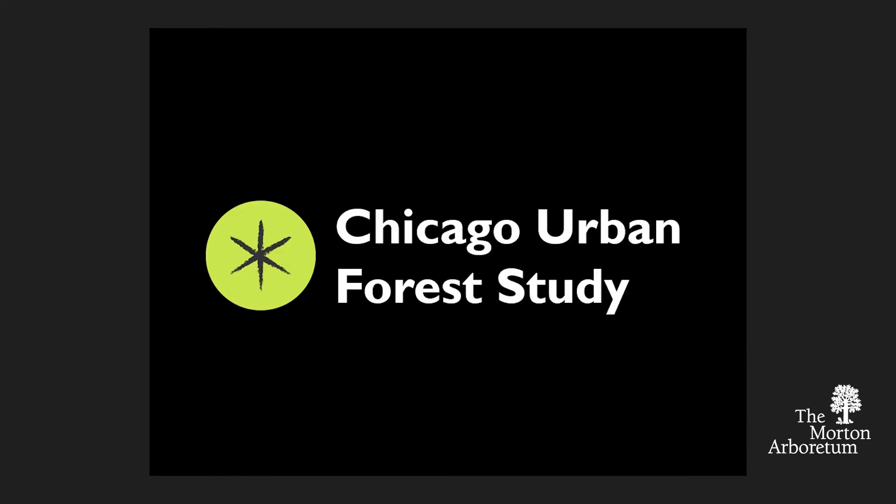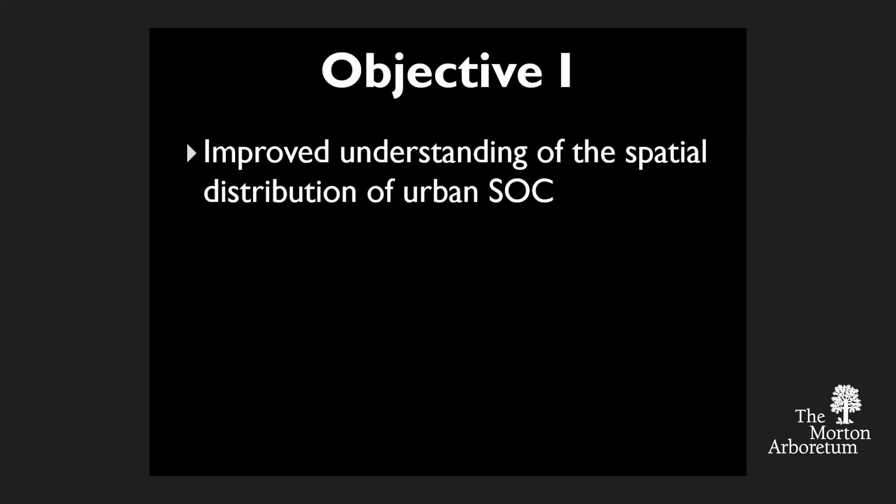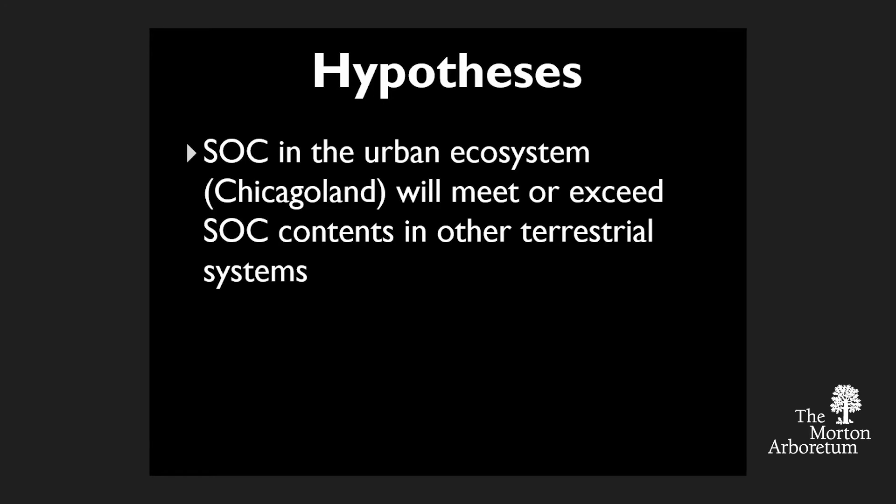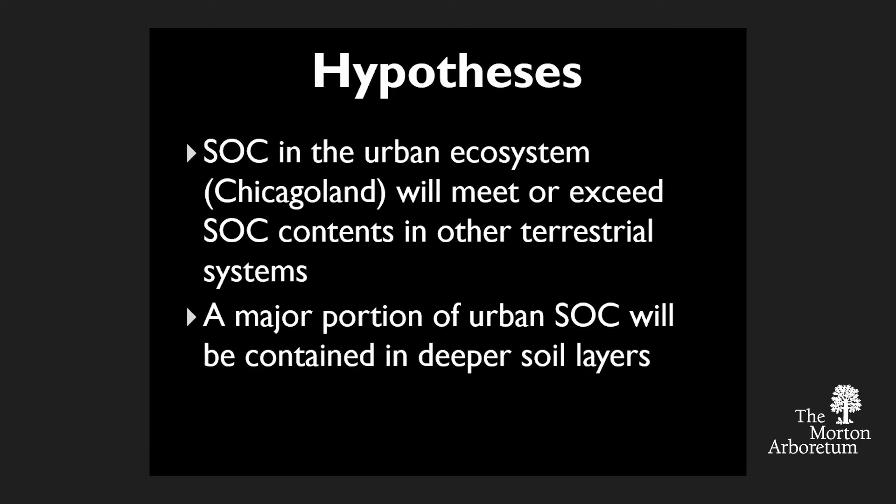The Chicago Urban Forest Study — the first objective relating to soils was to get a better understanding of the spatial distribution of soil organic carbon in the Chicagoland ecosystem. We think carbon contents in the urban system are actually going to exceed what you'd see in natural systems. Some recent studies have found urban soil organic carbon contents to be quite high because a lot of these soils are extremely artificial, we put a lot of inputs into these systems, and below the typical sampling of 25 centimeters, we think we're going to find a lot more carbon when we go deeper.